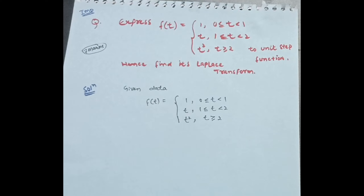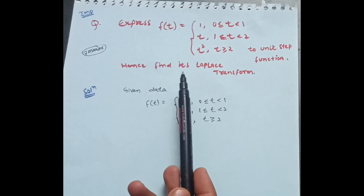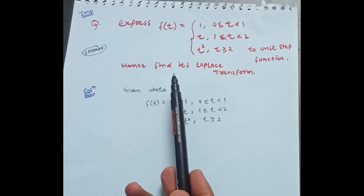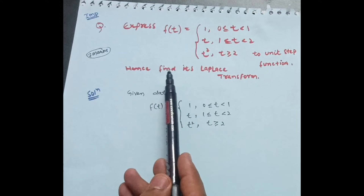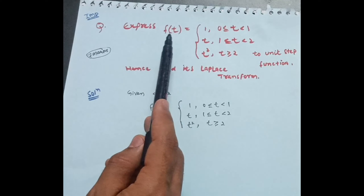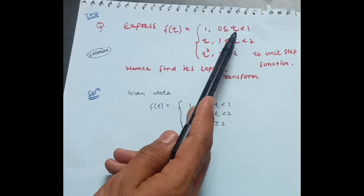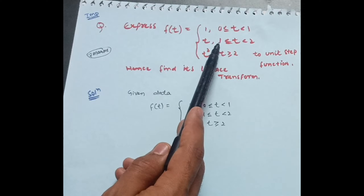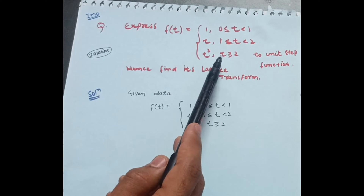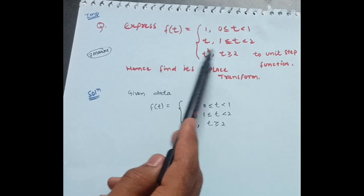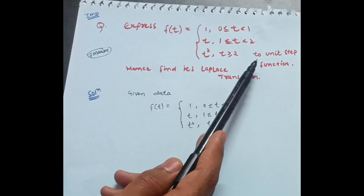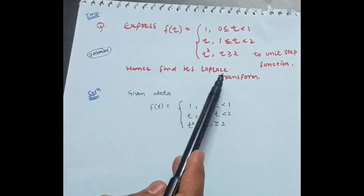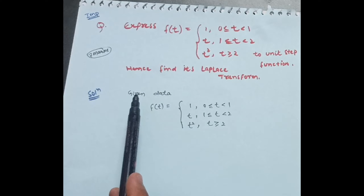Hello everyone, welcome back to my channel. Today we are solving a problem on the unit step function, also called the Heaviside function. This is the most important question for VTU Engineering Mathematics 3 examination, carrying seven marks. The problem is: express f(t) — defined as 1 for 0≤t≤1, t for 1≤t<2, and t² for t≥2 — in terms of unit step functions, and hence find its Laplace transform.